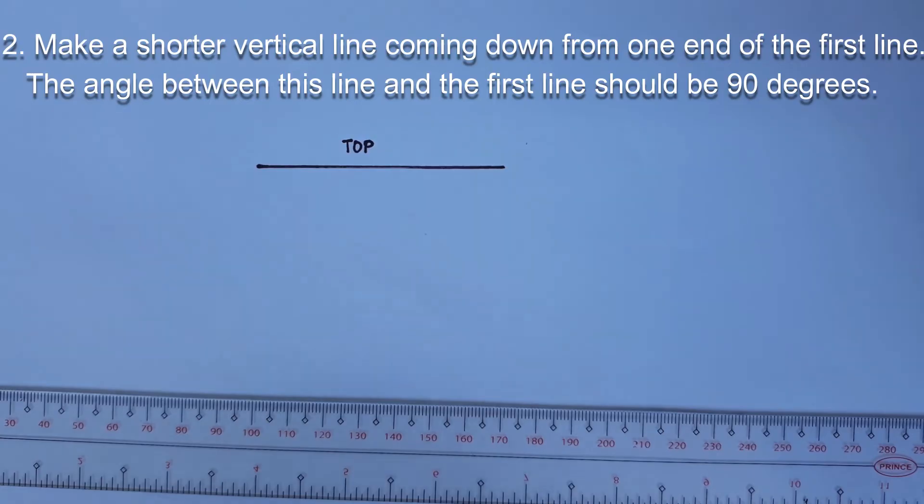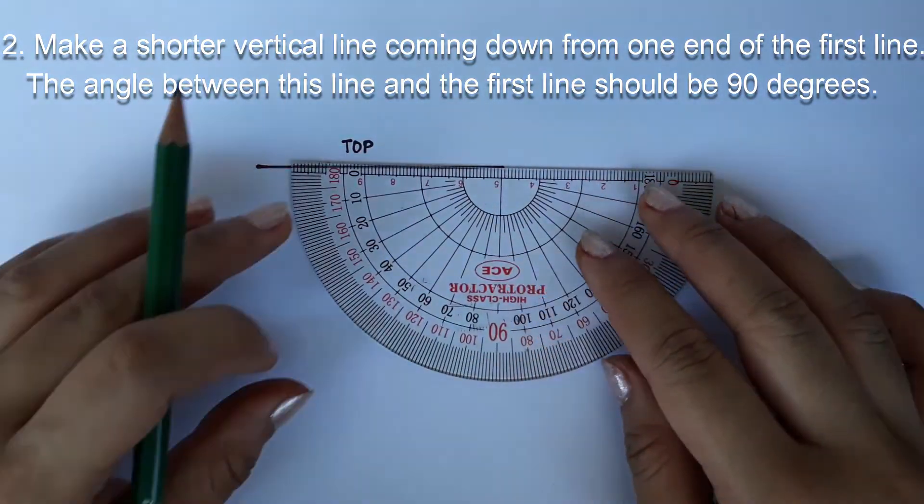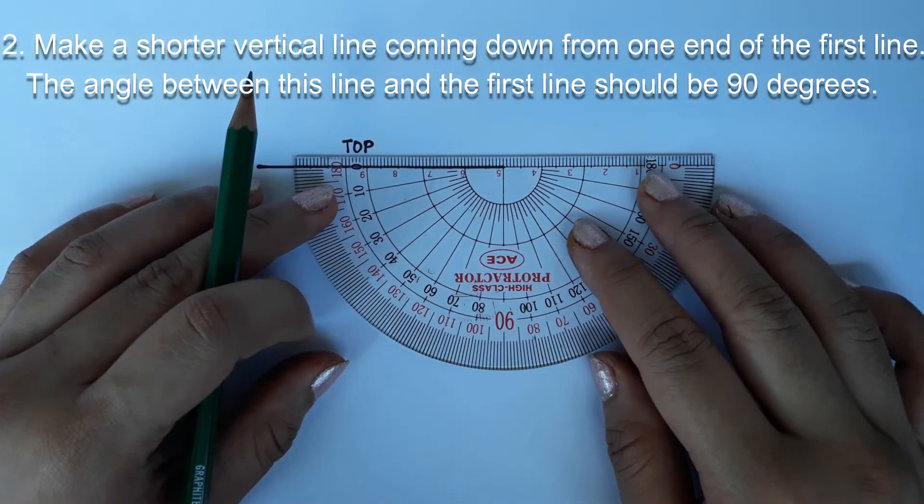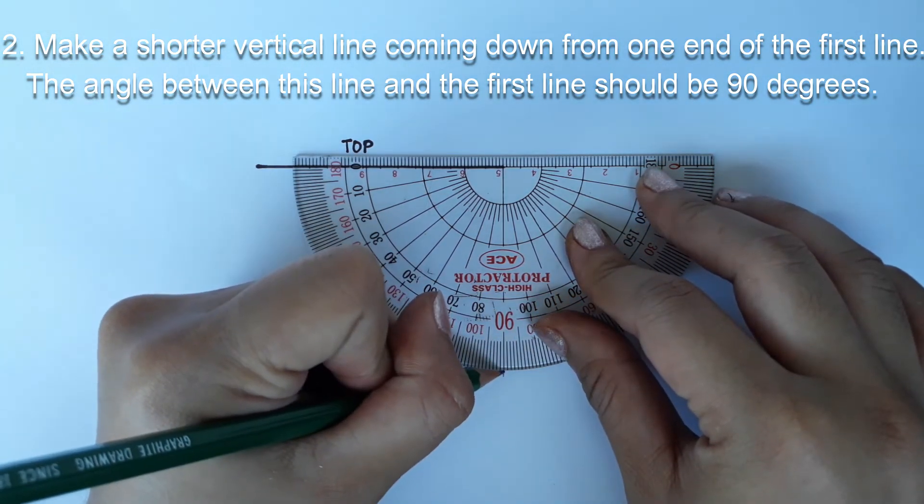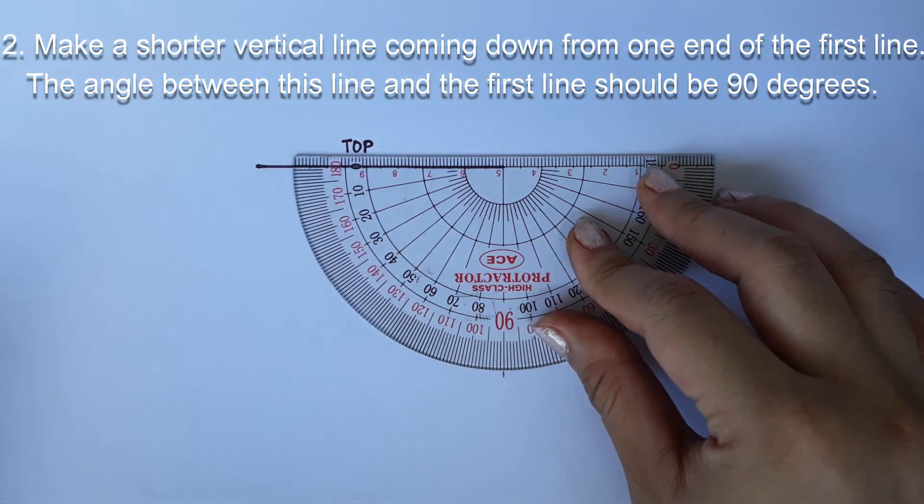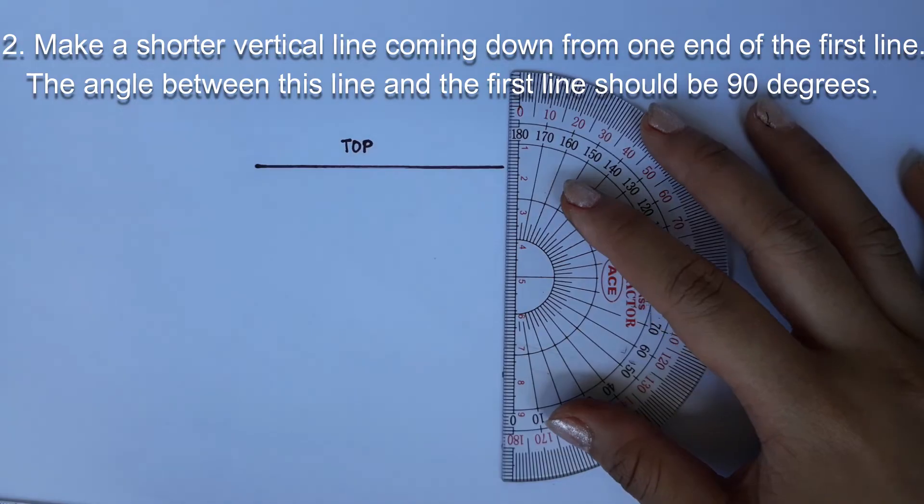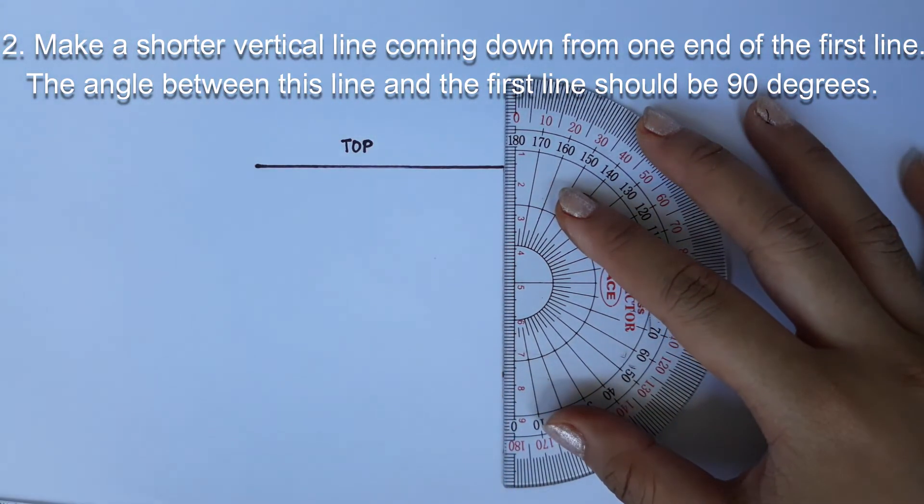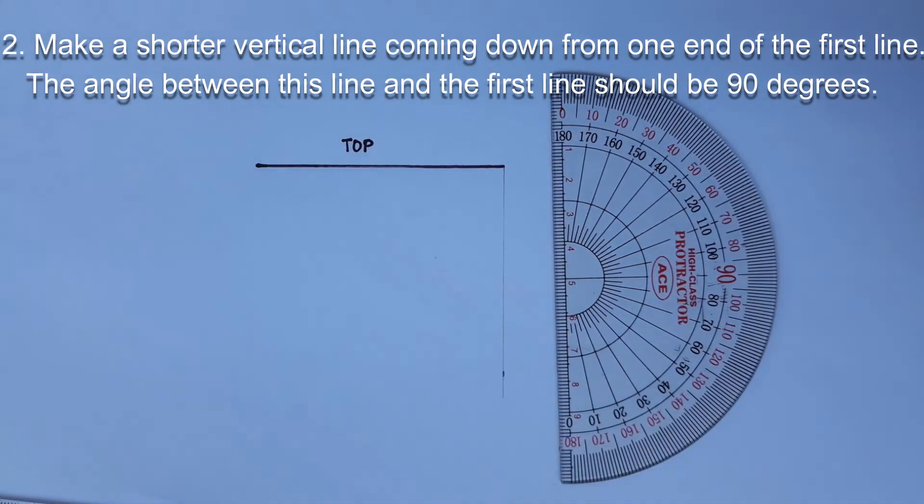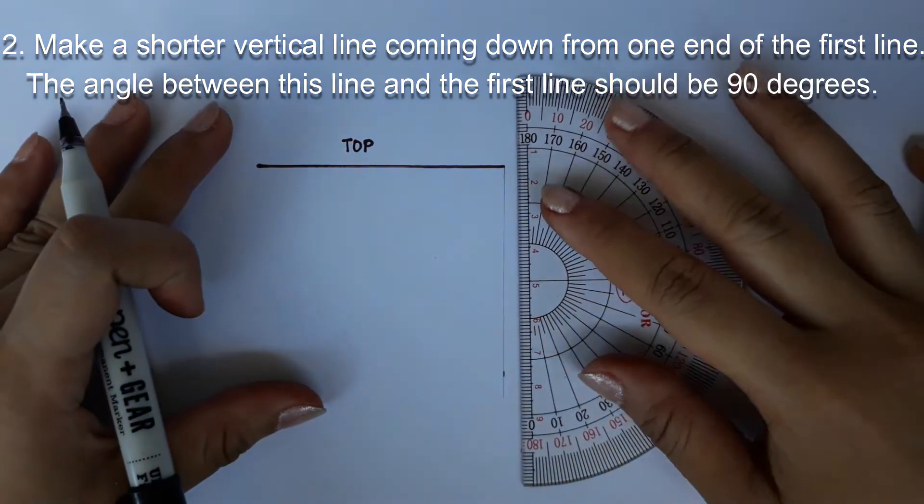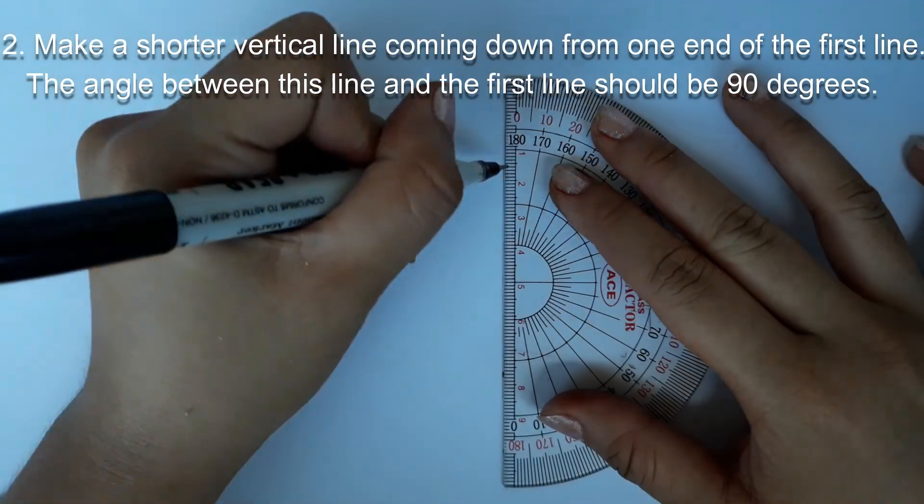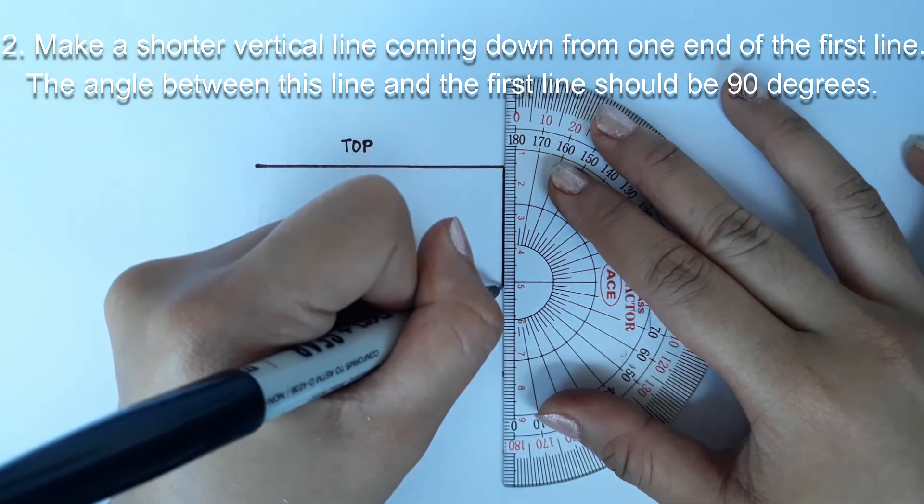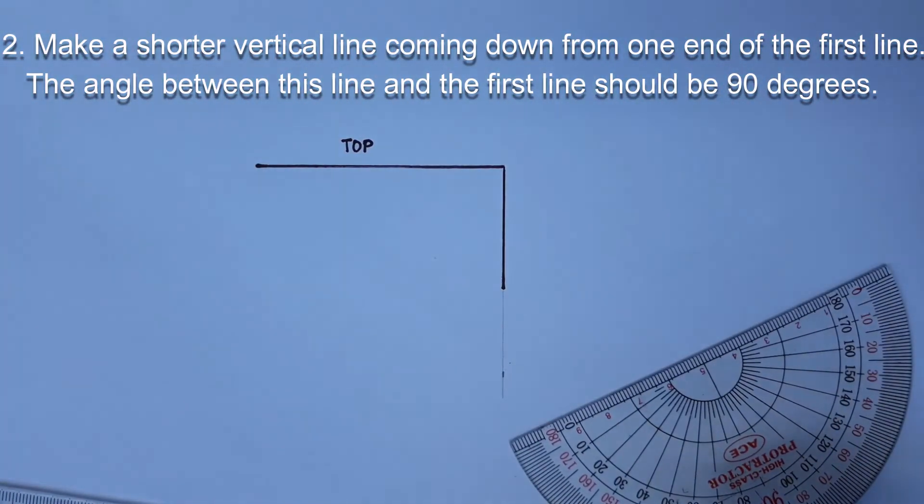Number 2. Make a shorter vertical line coming down from one end of the first line. Use the ruler to draw this line too, so that it's straight. The angle between this line and the first line should be 90 degrees. Make sure this line is shorter than the first line you draw. If it is the same length, you'll end up drawing a square instead of a rectangle.